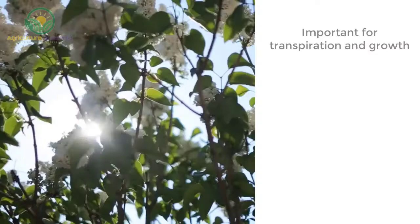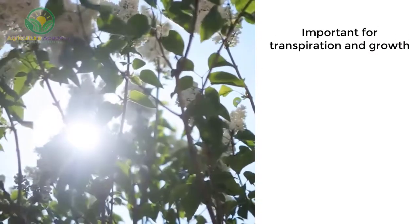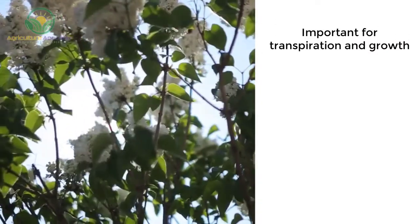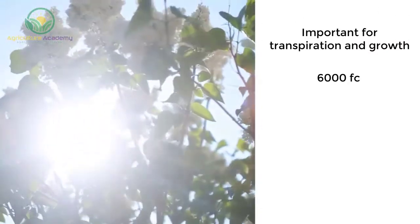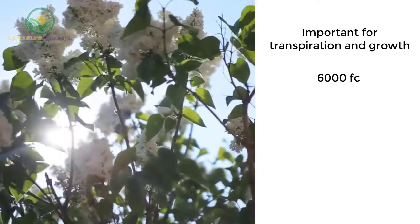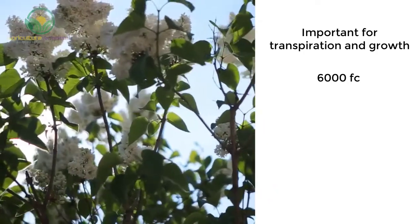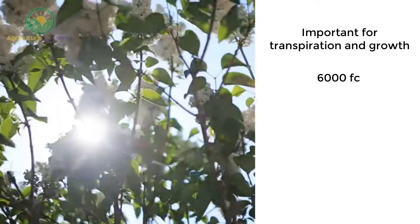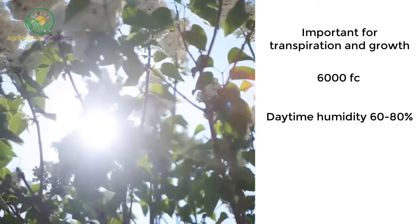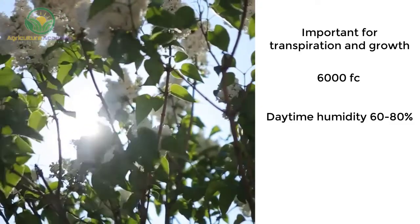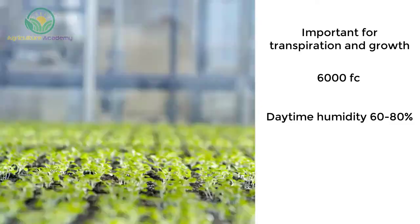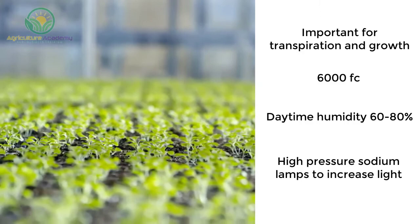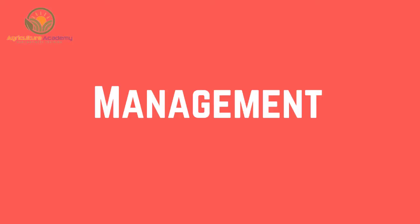Light. Light is important for transpiration and growth. Adequate light levels should be maintained at around 6,000 foot-candles. Optimal daytime humidity is around 60 to 80%. If natural light is low, high-pressure sodium lamps can be installed.